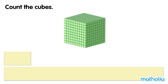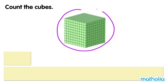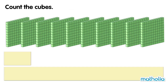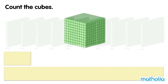Count the cubes. In each big block, there are 10 100-blocks. Let's count. 100, 200, 300, 400, 500, 600, 700, 800, 900, 1000. There are 1000 cubes in the big block.